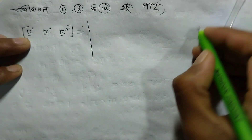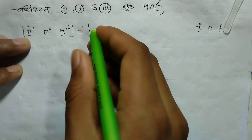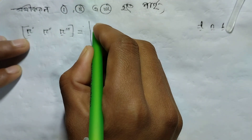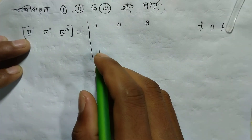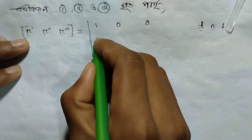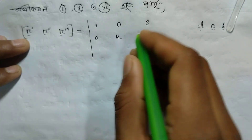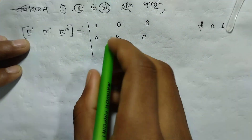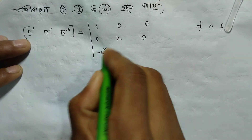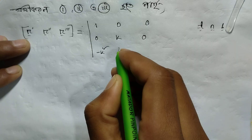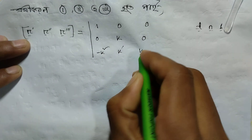Taking t, n, b — and computing: r prime dotted with t gives 1, n gives 0, b gives 0. r double prime — the t component is 0, n component is kappa, b component is 0. r triple prime — t component is minus kappa squared, n component is kappa prime, b component is kappa tau.